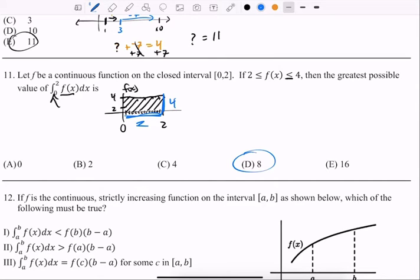Now I know this question doesn't ask, but what if it said, what is the lowest? Now you know, right, that the lowest that f can be is 2, and so you would have a different area that you would have to find. It would be 2 times 2, which would be 4. That would be the smallest value that this could equal.